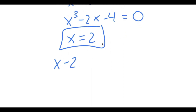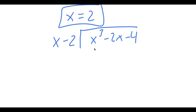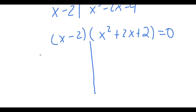Since x minus 2 equals 0 is a solution, we divide our original equation x³ minus 2x minus 4 by x minus 2. Doing this, you end up getting x minus 2 times x squared plus 2x plus 2 equals 0. This gives two equations: x minus 2 equals 0, and x squared plus 2x plus 2 equals 0.